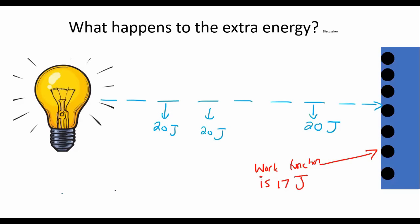Because the law of nature tells us that energy cannot be created or destroyed, it can only be converted from one form into another form. So if you have 20 joules of energy coming in and 17 joules is going to be used up to remove the electron, that's almost like you're trying to break this little bond over here between the electron and the proton. So you need 17 joules to be able to do that.